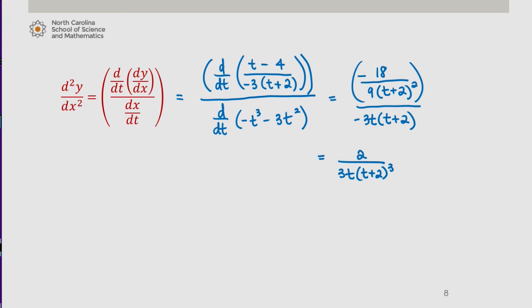We note that this expression changes sign when the denominator changes sign. And that happens when t is 0 and t is -2. Verify this using what you know about calculus. And this tells us that the concavity of the curve changes at each of those times.